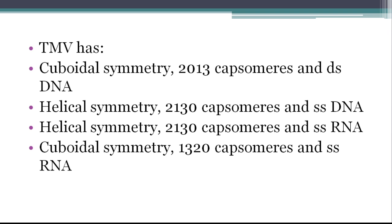So here is another question and it is also easy. TMV has, does it have cubical symmetry? No, it doesn't have cubical symmetry, it has helical symmetry. So these two options you can eliminate first. We have two options: helical symmetry and helical symmetry here. So both are 2130 capsomers. After that, here is DNA or RNA. We know that it is RNA, so there are RNA viruses and that is single-stranded RNA virus. So our correct answer is helical symmetry, 2130 capsomers, and single-stranded RNA. So our correct option is this one.